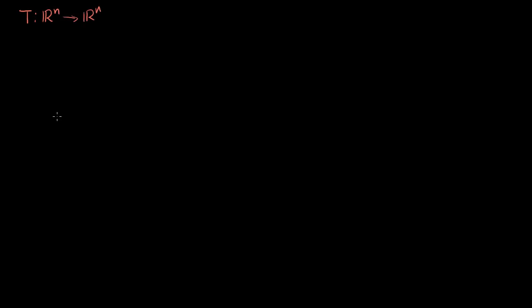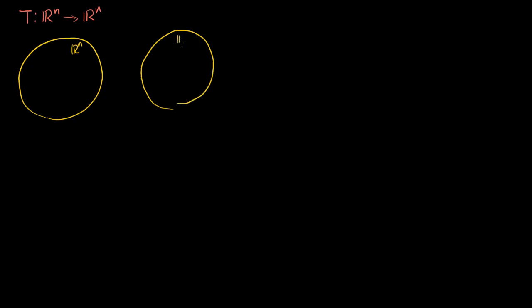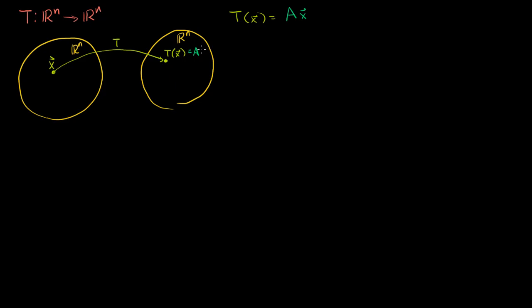Let's say I've got some linear transformation T that is a mapping from Rn to Rn. So if the domain is Rn and the codomain is also Rn, if you give me some vector x in our domain, then T will map it to some other member of Rn. We call that T of x. And since T is a linear transformation, the mapping of x to its codomain is equivalent to x being multiplied by some matrix A. So T(x) equals A times x.